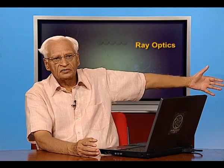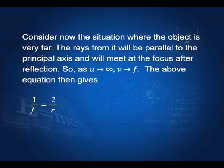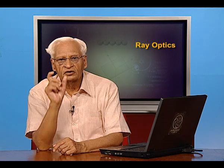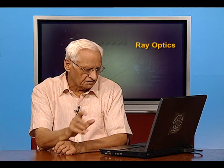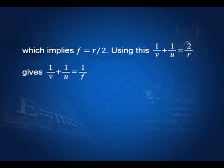If the object is very far off at infinity, then u becomes infinity and v becomes f, since rays coming from infinity meet at the focus. Therefore we get 1/f = 2/R, which gives us the relation that the focal length of a concave mirror is half the radius of curvature: f = R/2. Using 1/v + 1/u = 2/R and 2/R = 1/f, this gives us the mirror formula connecting the distance of the image, distance of the object, and the focal length: 1/v + 1/u = 1/f.